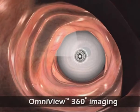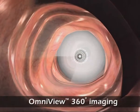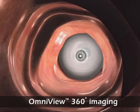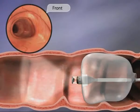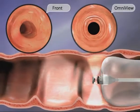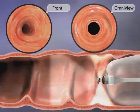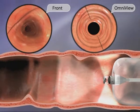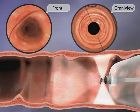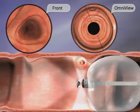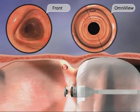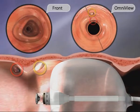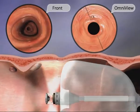Aeroscope's advanced vision system provides two simultaneous views for comprehensive visualization ahead of the capsule, behind it, and to all sides. They are provided by a 90-degree forward-looking lens and a proprietary Omniview camera providing 360-degree views of the mucosal surface in front, behind, and to the side of the moving capsule.